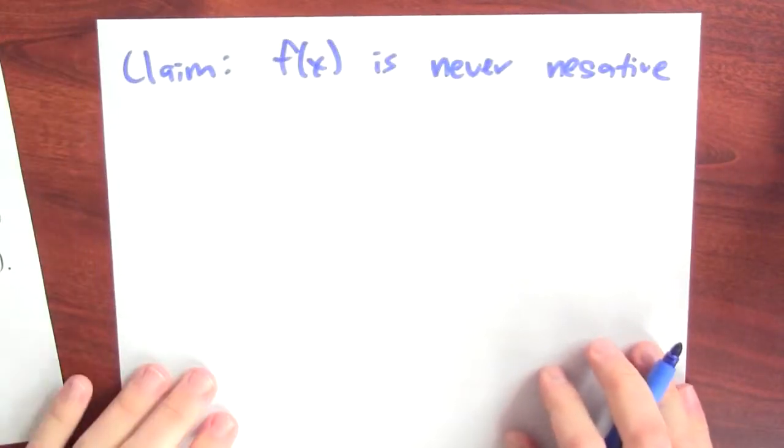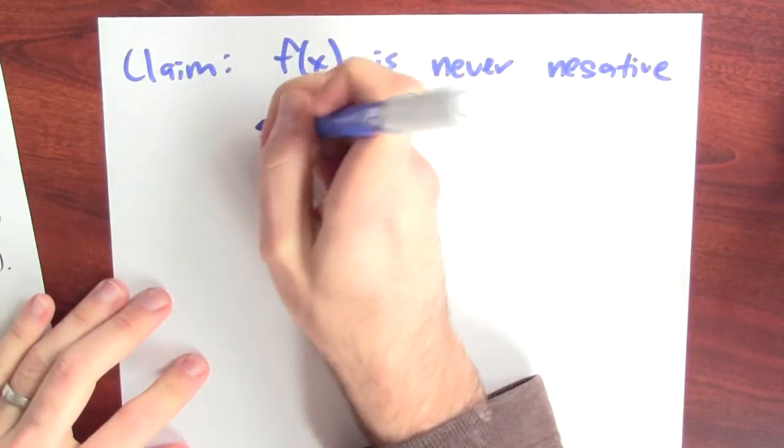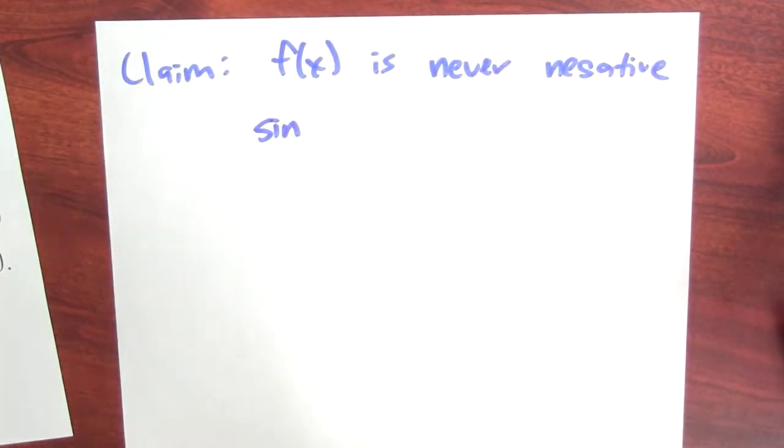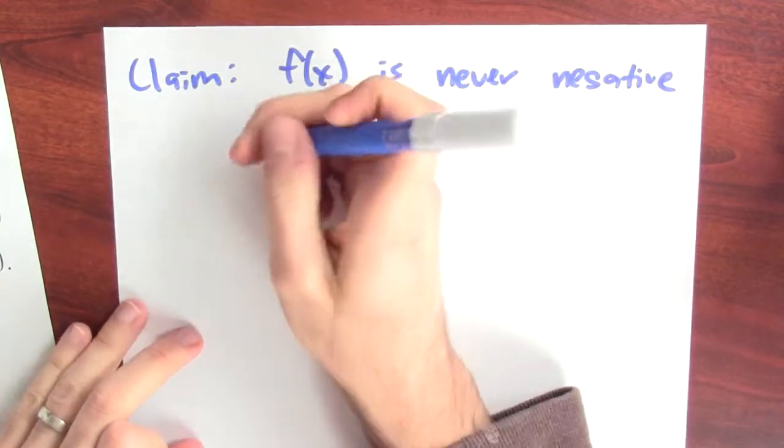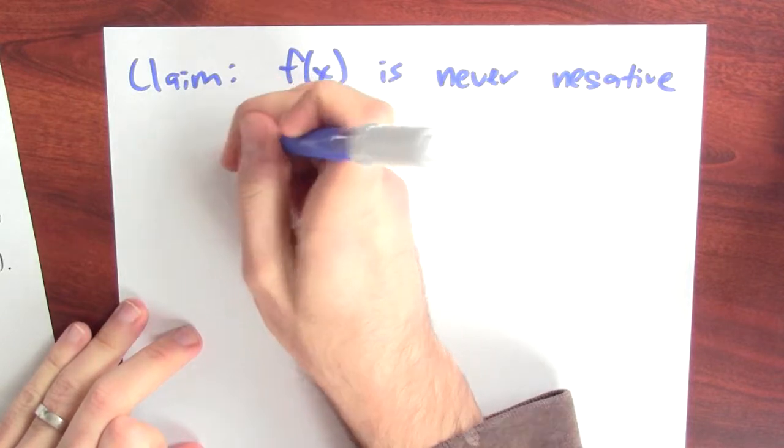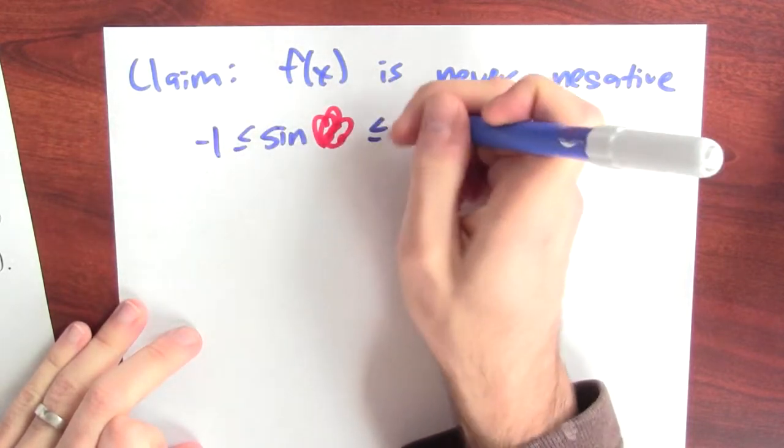How do I know that? Well, what do I know about sine? Sine of absolutely anything at all, no matter what I take the sine of, is between minus 1 and 1.